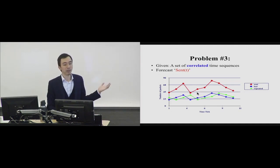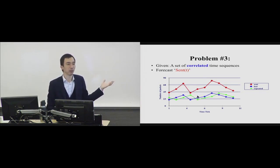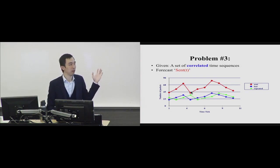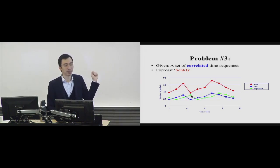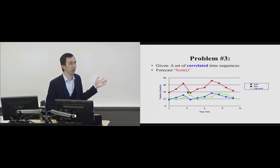Now imagine no one tells you what these three time series represent, and you need to find which three out of a million lines are correlated like these. That's often the real problem. Generalizing to stock prices — if you can find correlated stocks and determine which one lags the other, you can use that to buy or sell strategically. Finding time-lagged correlated time series is therefore very important.